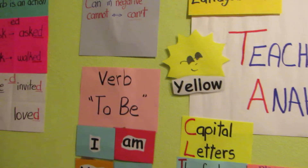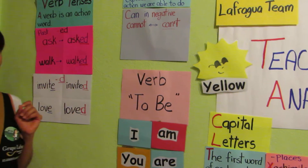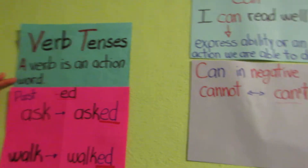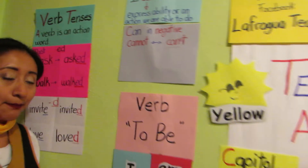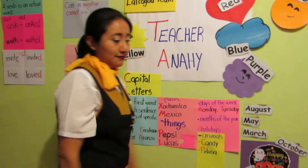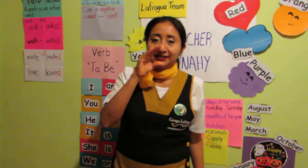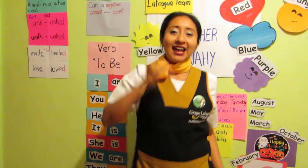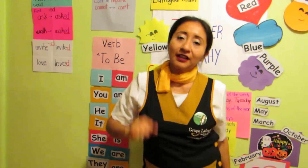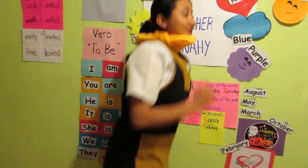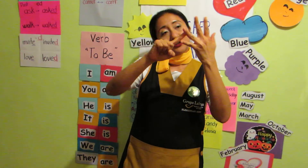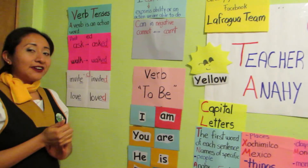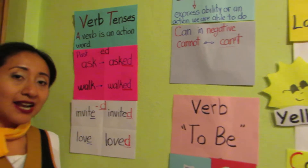The other topic that you learned was verb tense. Remember, a verb is an action word. For example: work, speak, dance, run, or count. But in the past tense, it's very different, because our verb changes.